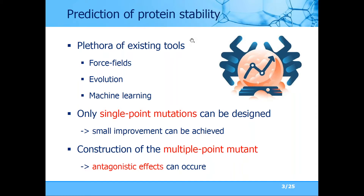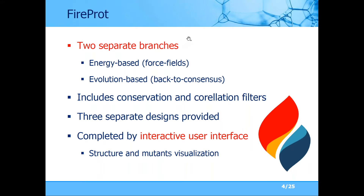Some tools use force field methods, some are based on evolution, and probably the most common are machine learning-based tools. A problem is that these tools usually serve only for the design of single-point mutations, which usually don't achieve very high improvement in stability. What you should try to do is construct multiple-point mutants, but here you may face antagonistic effects — combining several mutations in one mutant can cause them to clash and actually damage protein stability instead of improving it.